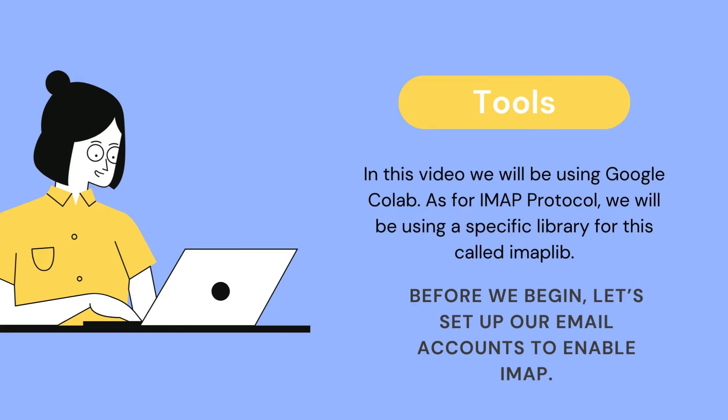In this video, we will be using Google Colab, and as our IMAP protocol we will be using a specific Python library called imaplib. But first and foremost, we must enable IMAP. To do so, we must follow two main steps: enabling IMAP and creating an app password.